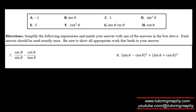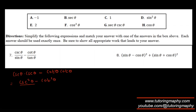For question 7, we have cscθ/sinθ minus cotθ/tanθ. Since 1/sinθ = cscθ, the first term becomes csc²θ. Since 1/tanθ = cotθ, the second term becomes cot²θ. So we have csc²θ minus cot²θ. Using the Pythagorean identity csc²θ = 1 + cot²θ, the cot²θ terms cancel, leaving 1 — that's option C.